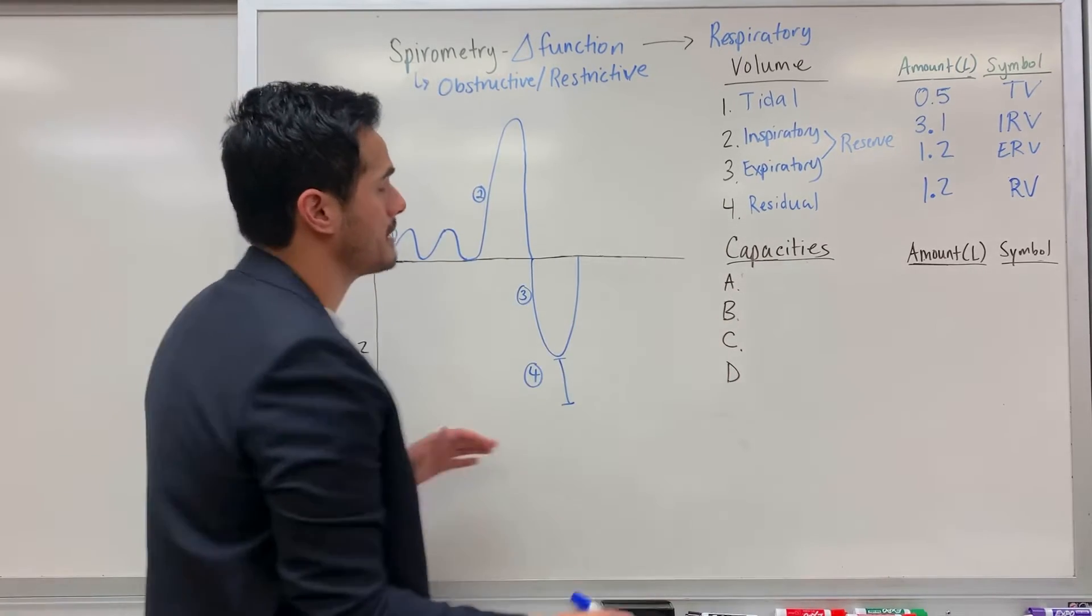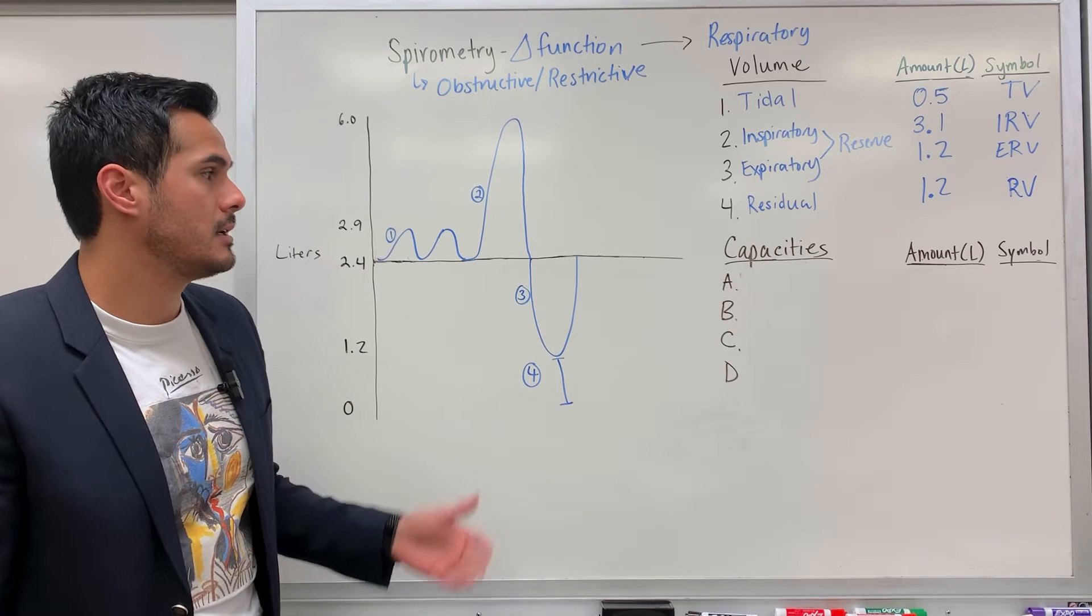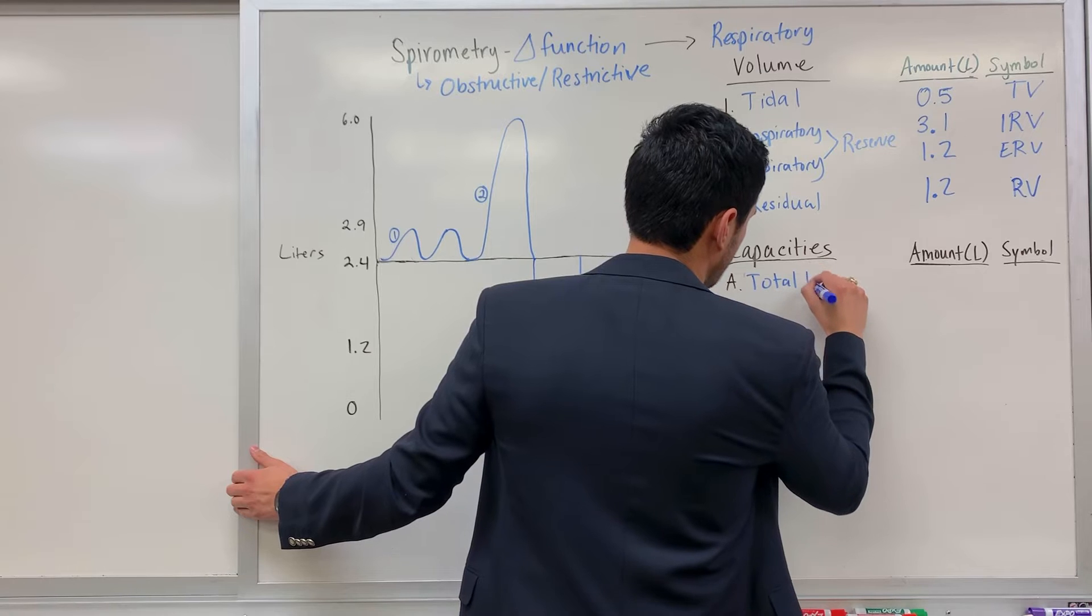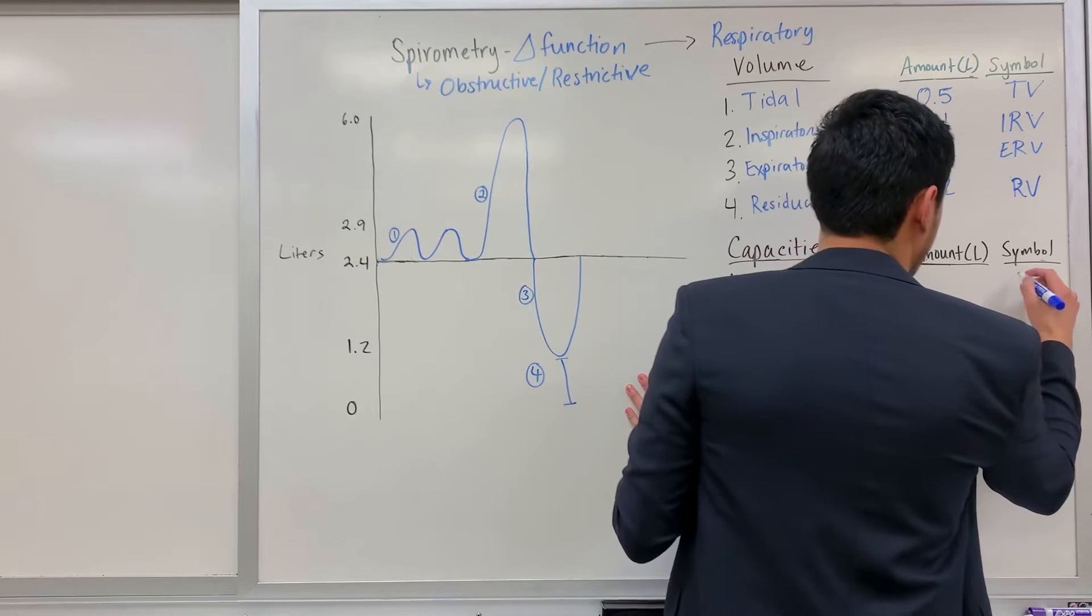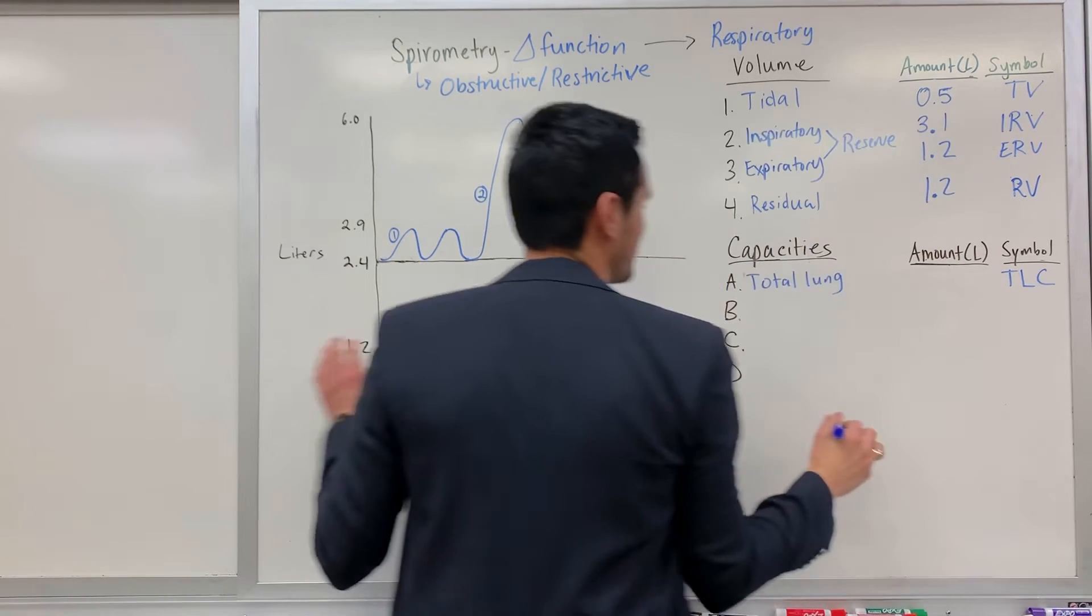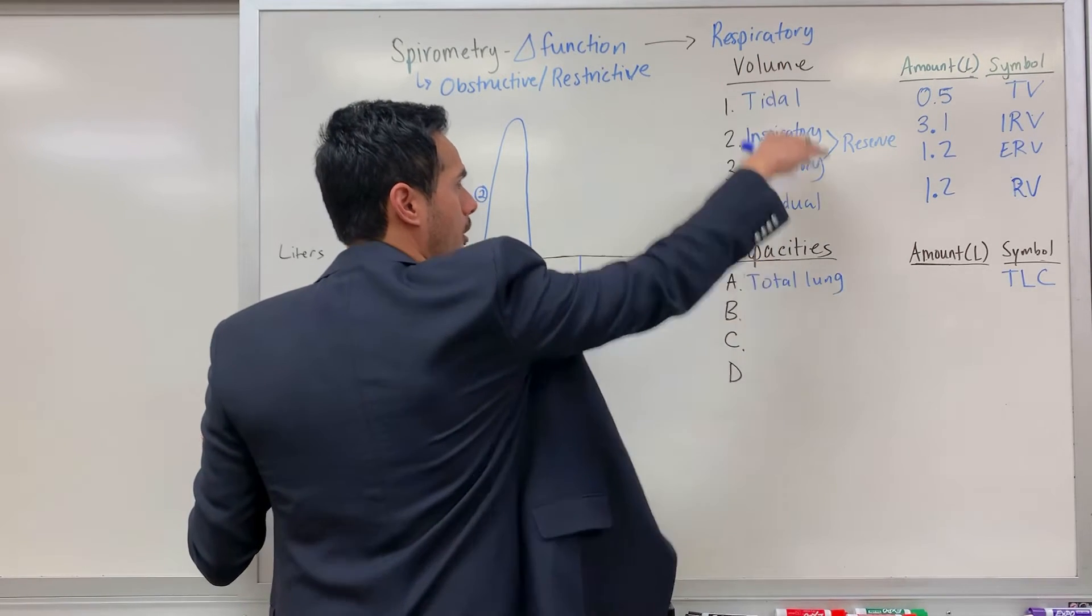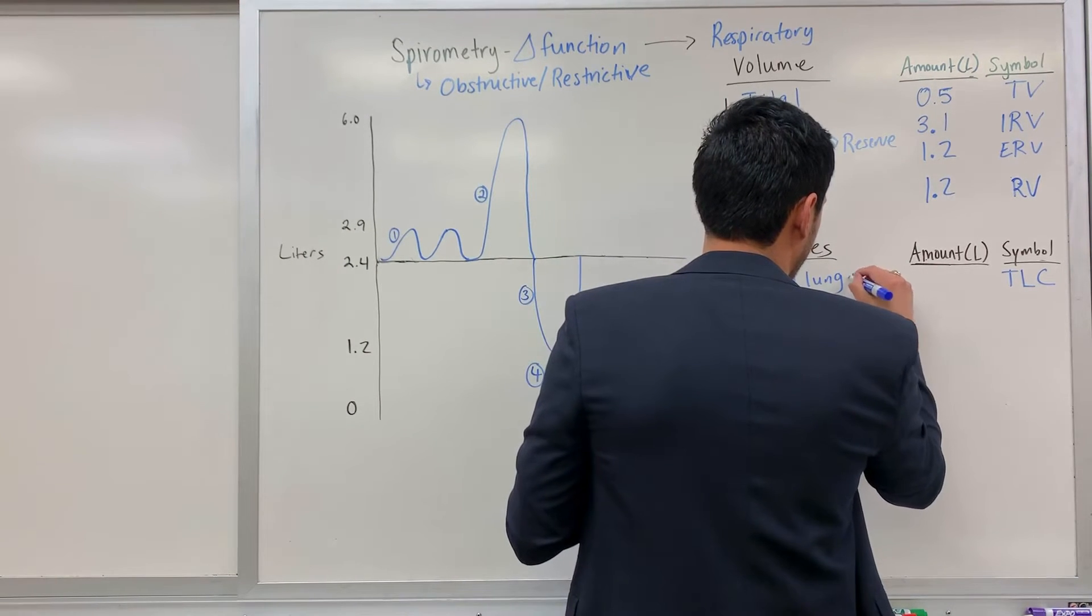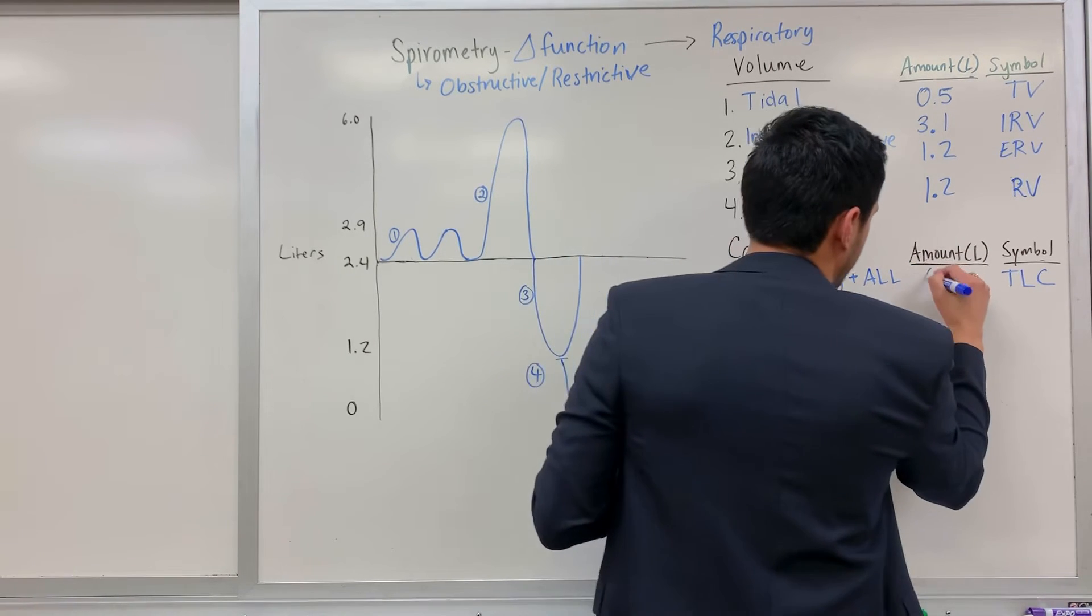Okay, so now that we've finished the volumes, let's get into the different capacities. The first one we'll go over is known as the total lung capacity, and the symbol for this is TLC, because we don't want no scrubs. To calculate the total lung capacity, we're just adding all of these different volumes up. A typical amount is roughly six liters.